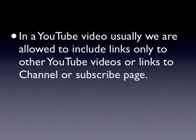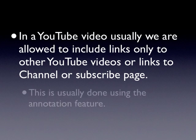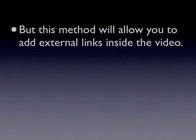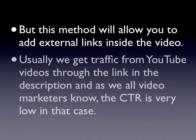In a YouTube video, usually we are allowed to include links only to other YouTube videos or links to a channel or subscribe page. This is usually done using the annotation feature, but this method will allow you to add external links inside the video. Usually, we get traffic from YouTube videos through the link in the description, and as all video marketers know, the CTR is very low in that case.